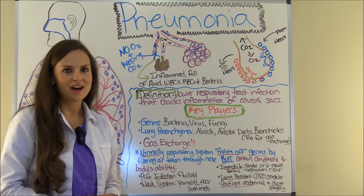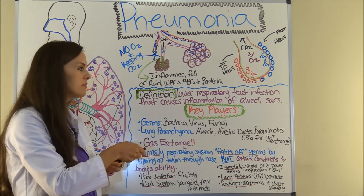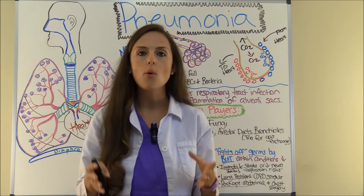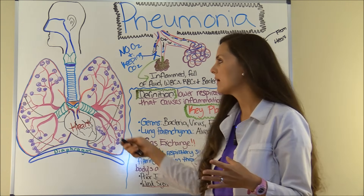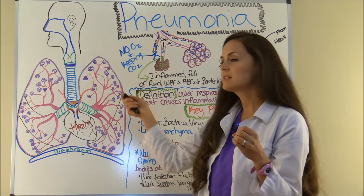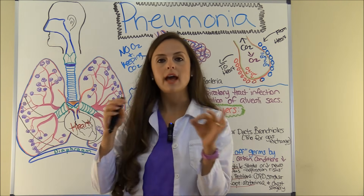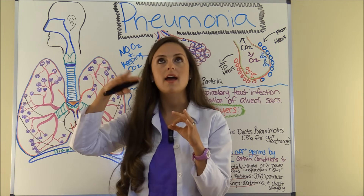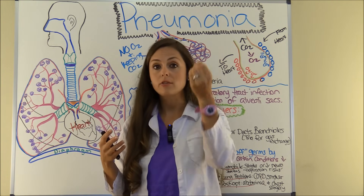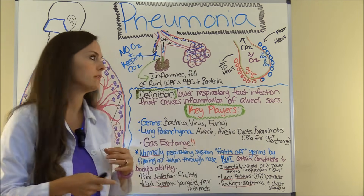First, let's talk about the definition of pneumonia. In a nutshell, it is a lower respiratory tract infection that causes inflammation of the alveoli sacs. The alveoli sacs are responsible for gas exchange. Here on your diagram, the purple areas that look like little grape sacs is where the gas exchange occurs. They inflate and deflate and they transport carbon dioxide out through a capillary wall so you can exhale it, because this is a waste product of metabolism. Then it takes that fresh oxygen you just inhaled and has it transported through the body.